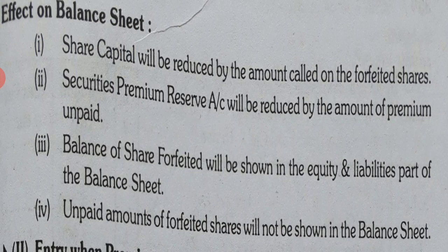When shares are forfeited, the share capital of the company gets reduced by that amount. Second effect: Security Premium Reserve account will also be reduced because it was not received — it was unpaid. Third effect: whatever is the balance of Share Forfeited account, that will be shown in the equity and liabilities part of the balance sheet. It becomes a liability — all reserves and provisions are liabilities anyway, as you studied in Chapter 13, Class 11.